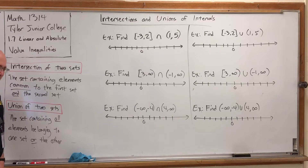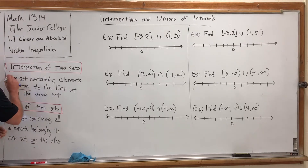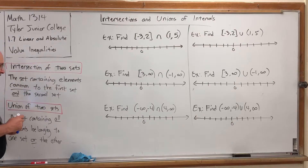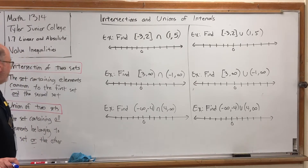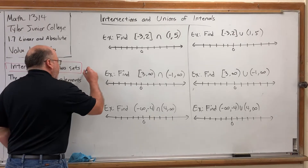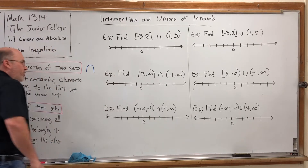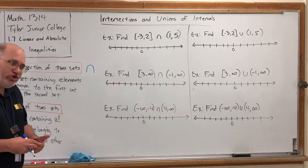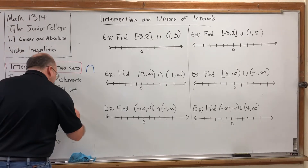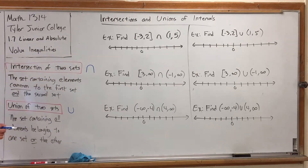The intersection of two sets — in this case two intervals — is the set containing elements common to the first set and the second set. In other words, it's what two sets have in common. The symbol for intersection looks like an upside-down U, also like a lowercase n, as in intersection. The union of two sets is the set containing all elements belonging to one set or the other — we join them together to make a larger set. The symbol for union looks like a capital U, which is easy to remember because union starts with U.